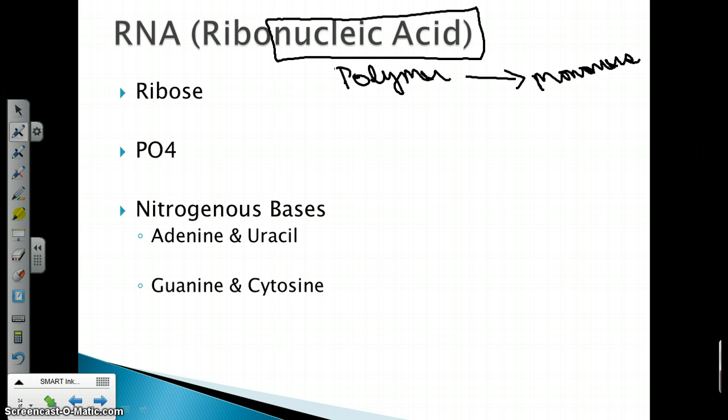The three main components of ribonucleic acid are ribose, phosphate, and nitrogenous bases. So let's begin first by looking at the name ribonucleic acid. We see a connection between ribose and ribo.